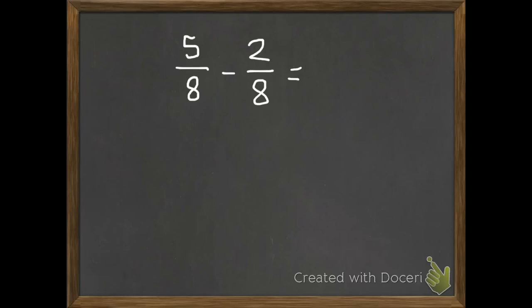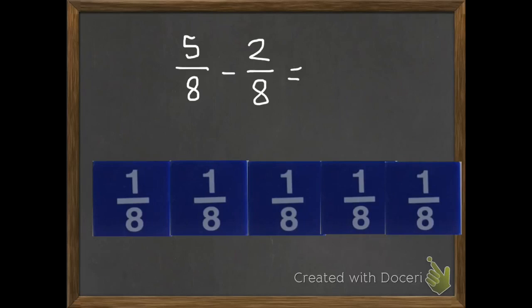So if I have a problem like this, 5 eighths subtract 2 eighths, and I want to use models, I'm going to take my eighths. I'm going to start with 5 of them, so 1, 2, 3, 4, 5 eighths.